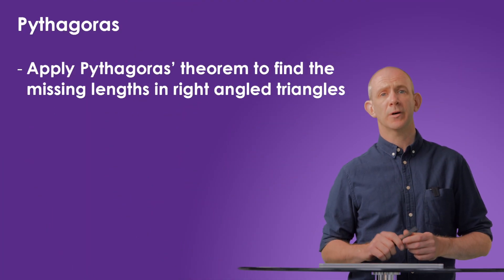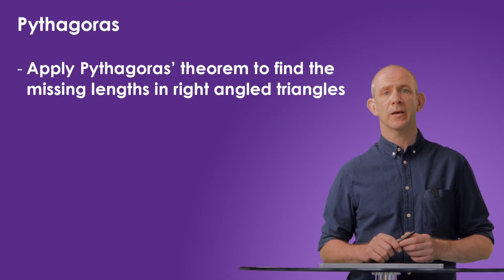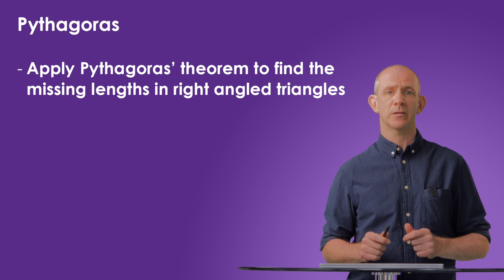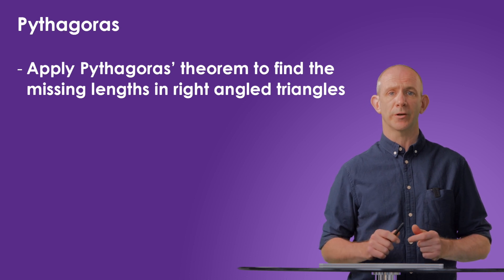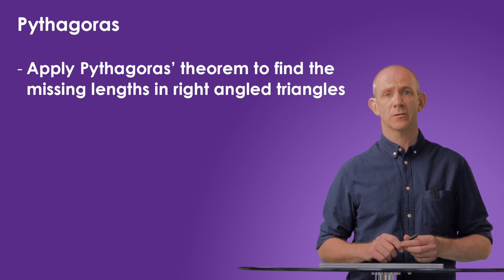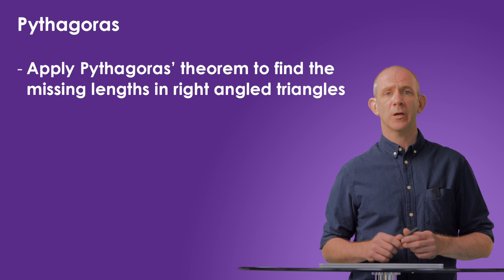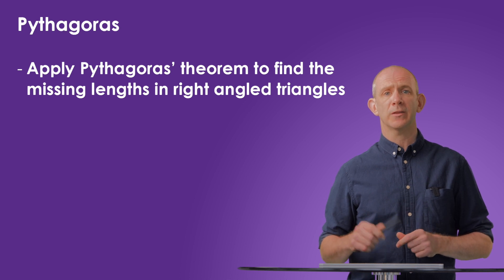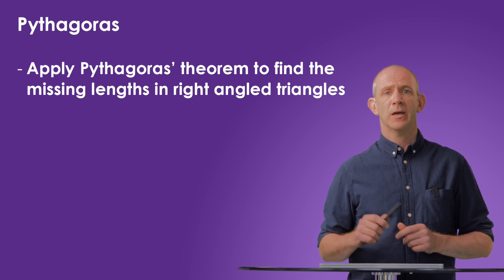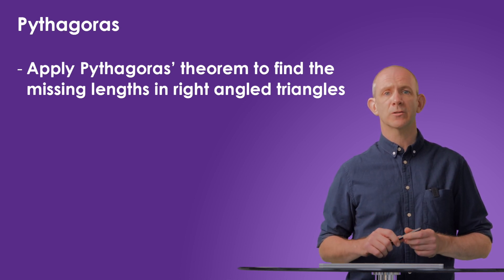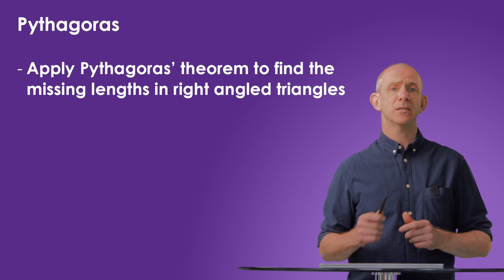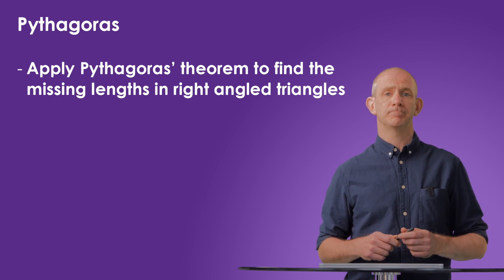In this video we'll be looking at Pythagoras Theorem and how it can be used to calculate the missing sides of a right angle triangle if you have the other two sides. Before starting this video it would be worth looking at the area and perimeter video, especially with regards to finding the area of triangles as this comes up often with this topic.